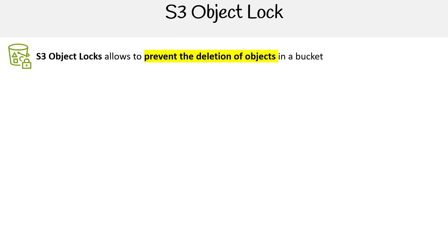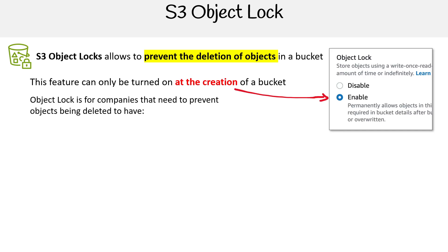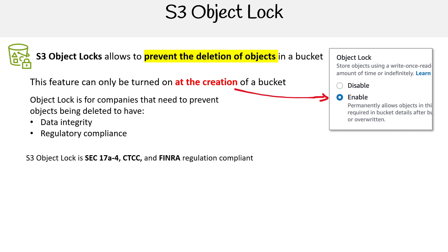S3 Object Lock allows you to prevent the deletion of objects in a bucket, and this feature can only be turned on at the time of creation of a bucket. Object Lock is for companies that need to prevent objects being deleted, to have data integrity and regulatory compliance. S3 Object Lock is regulatory compliant with standards like SEC 17a-4, CTCC, and FINRA.